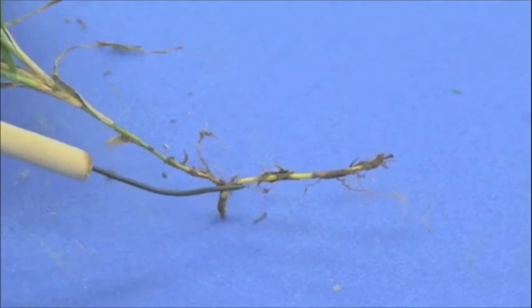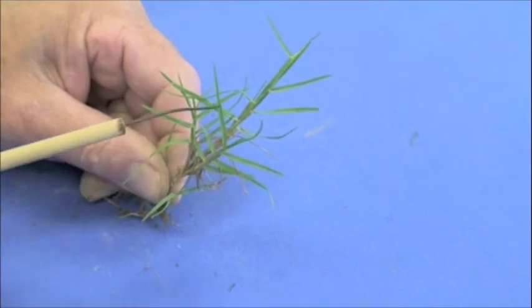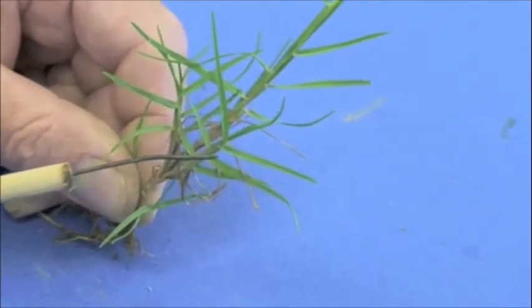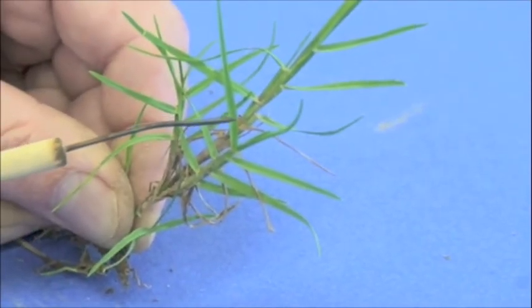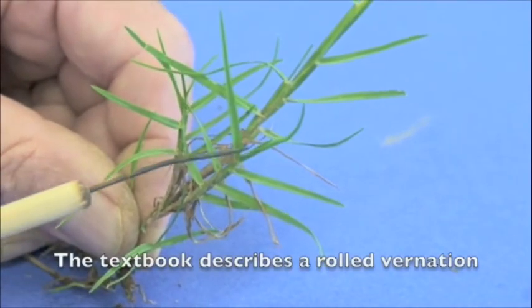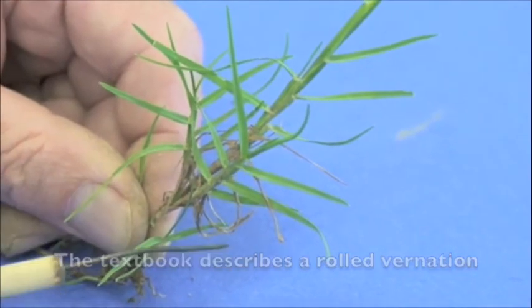Seashore paspalum, it tends to be more of a fine textured grass and once again, can tolerate these much lower mowing heights that you might find on anywhere from a fairway down even to a putting green height. It appears to be a folded leaf vernation as you take a look as the leaves emerge.